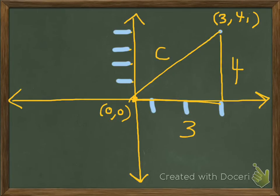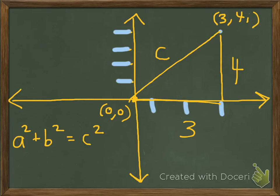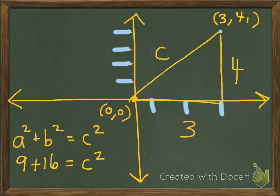To do this, we use the equation a-squared plus b-squared equals c-squared. So a would be 3, so a-squared is 9, plus b-squared would be 4-squared, which is 16, equals c-squared. So c would be the square root of 25, and the square root of 25 is 5. So the absolute value is 5.